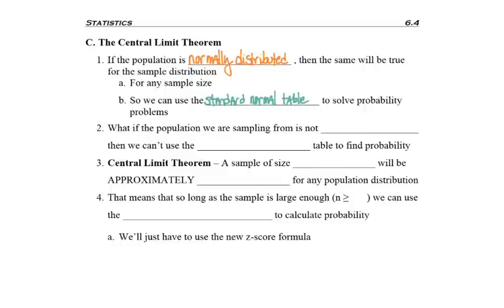But point two, what if the population we're sampling from is not normally distributed? Then in general, we would not be able to use the standard normal table to find probability.